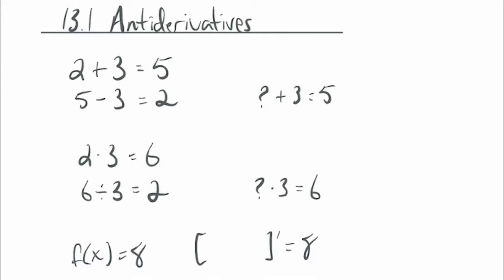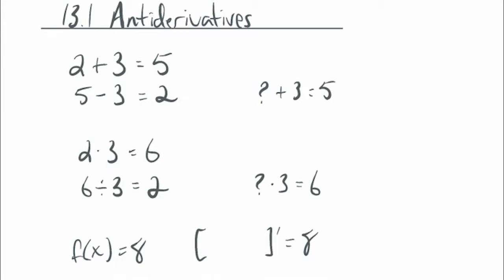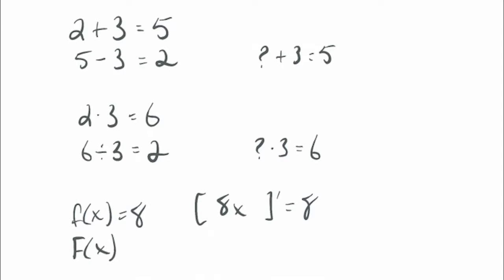So let's say I had f(x) = 8. I want to know: what would you start with and find the derivative to get 8? There's something, you find the derivative, and you get 8 as a result. Someone would say, oh, 8x, which is correct. That is an antiderivative of 8. If you start with 8x and find the derivative, you get 8. So we can say capital F(x) = 8x. That is an antiderivative.